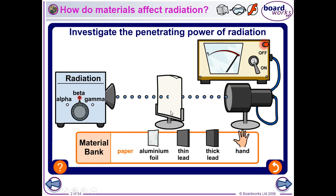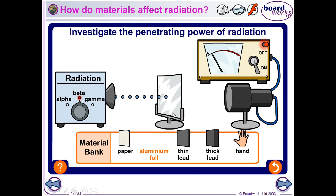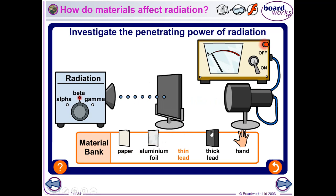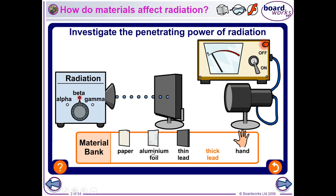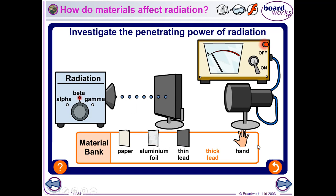A piece of paper won't stop beta radiation, but aluminium foil will, and thin or thick lead definitely will. Aluminium is a lot less dense than lead — lead is a very dense metal — so lead and aluminium foil will absorb beta, but not paper or skin.